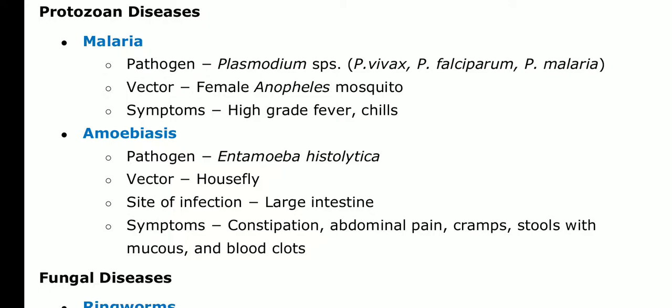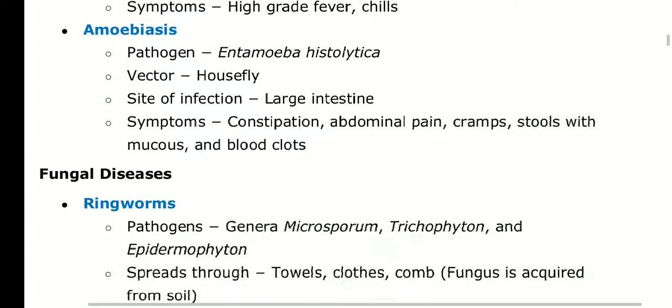Amoebiasis — just for information. Students preparing for competitive exams can study this; others can ignore it. Amoebiasis is caused by the pathogen Entamoeba histolytica. The vector is the housefly. Site of infection is the large intestine. Symptoms include constipation, abdominal pain, cramps, and stools with mucus and blood clots.